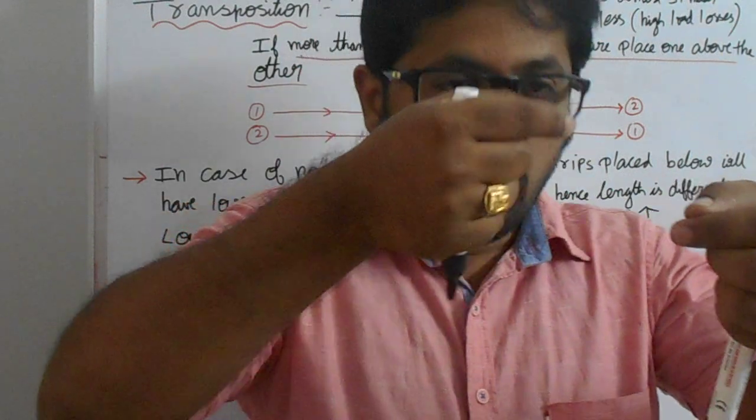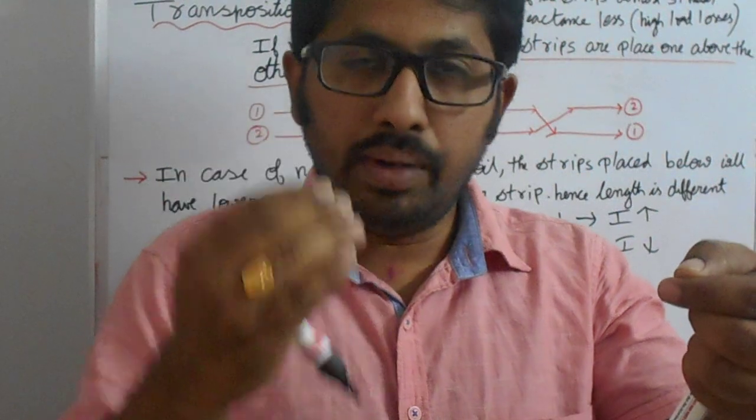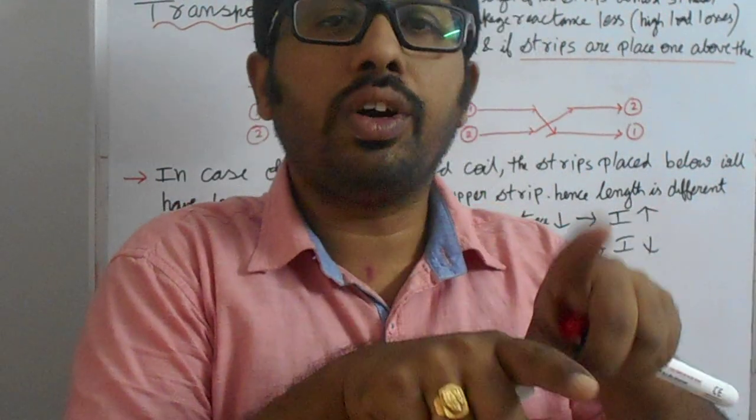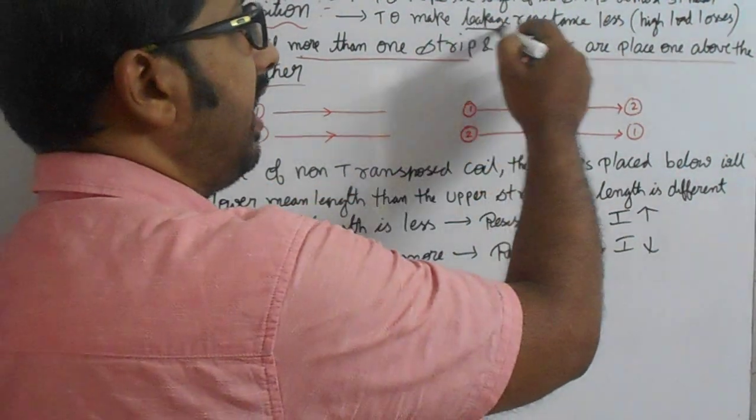If you see the upper one, the mean length will be more, the resistance will be more, and the current will be less. So uneven distribution of current will lead to more load losses or high leakage reactance.